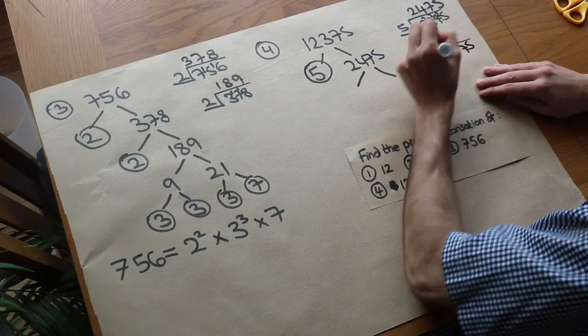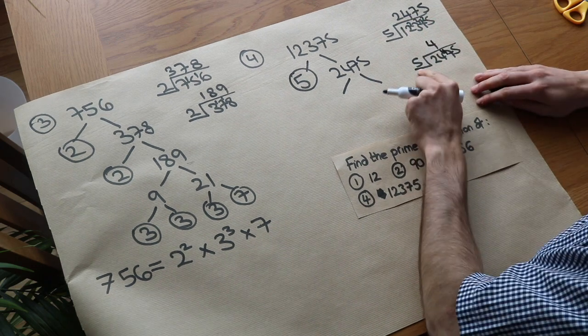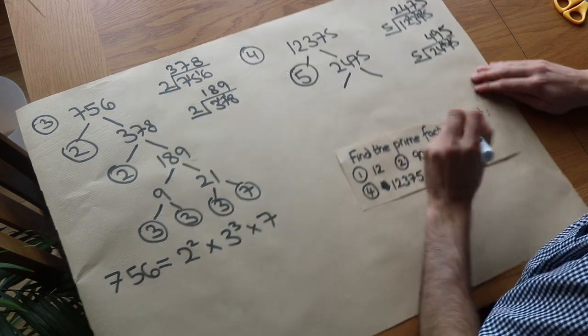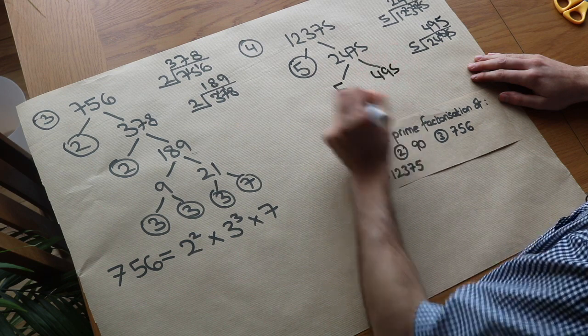So if we do the same thing again. 2,475 divided by 5. 5 goes into 24, 4 times, remainder 4. 5 goes into 47, 9 times, remainder 2. And 5 goes into 25, 5 times. So we've got 5 again and 495. 5 is prime.